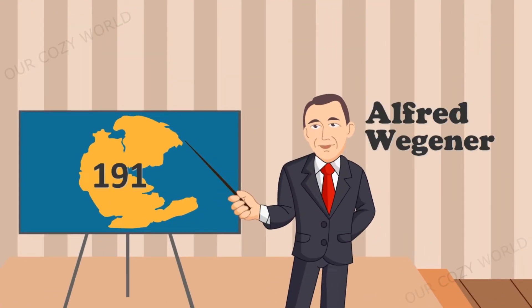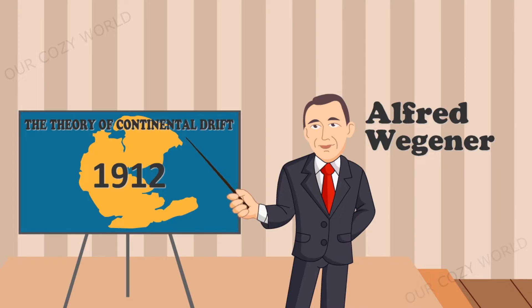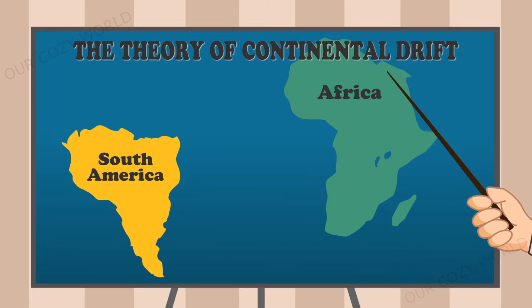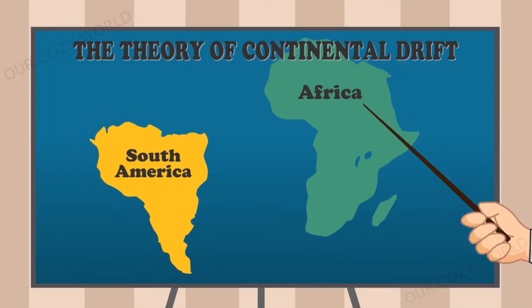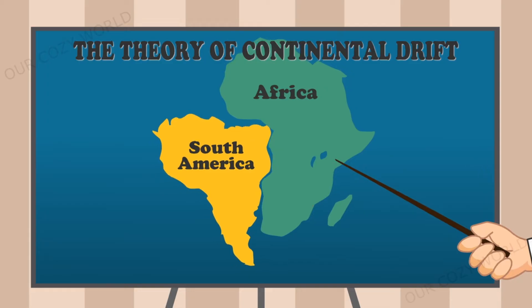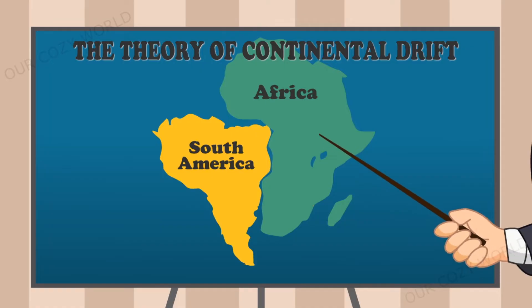According to Wegener, the main proof of his theory lay in the fact that if you look at geographical maps, the coastlines of South America and Africa can be fitted together like pieces of a jigsaw puzzle. Incidentally, some scientists had noticed this feature of the coastlines' contours long before him.